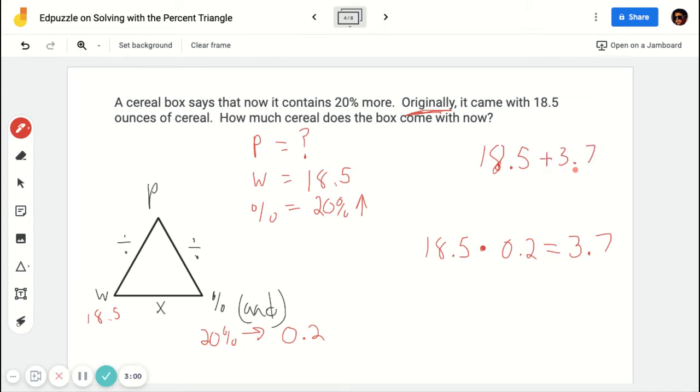And that would give me a final answer of 22.2 ounces. So the triangle isn't going to always be the perfect way of getting to the answer. But you can use it to get there, just like we did on this one here. Let's try another one.